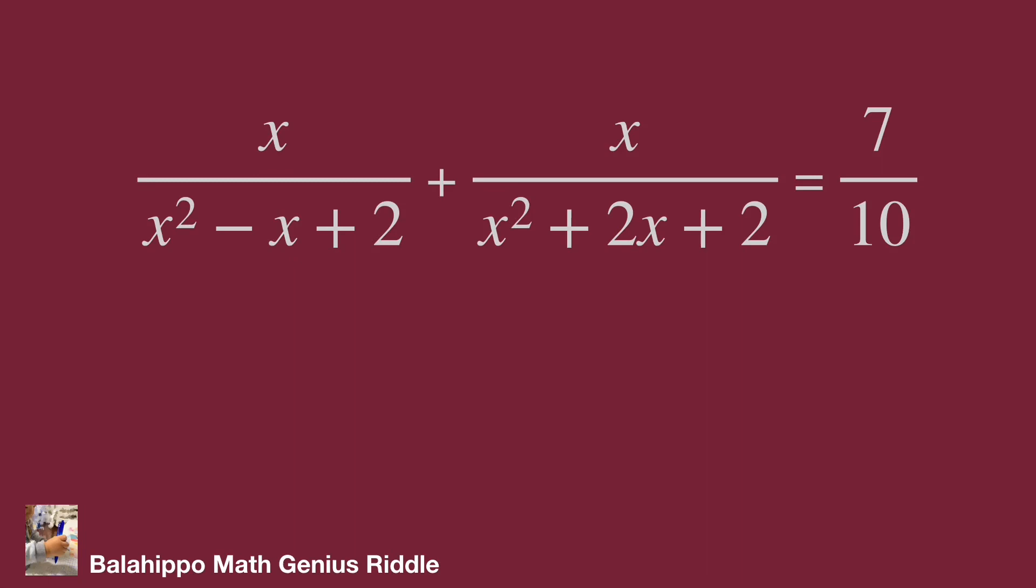The given equation is x over x squared minus x plus 2, plus x over x squared plus 2x plus 2, equal to 7 over 10. There are fractions. If we add all these fractions, then the quadratic equation will become complicated. Then how should we start?